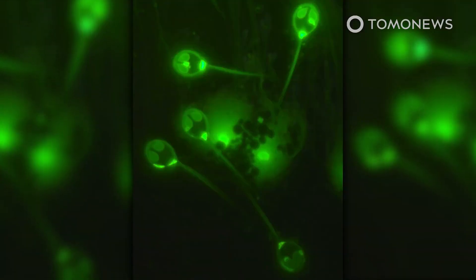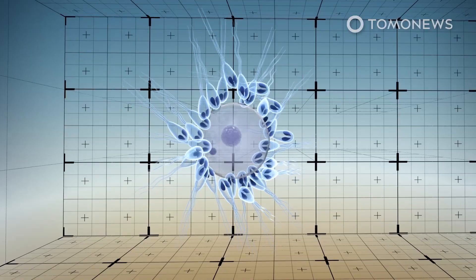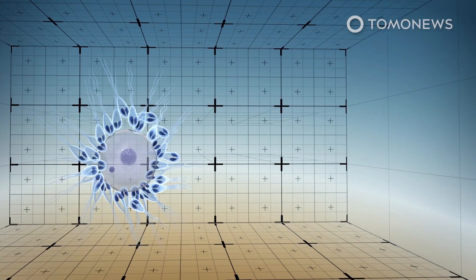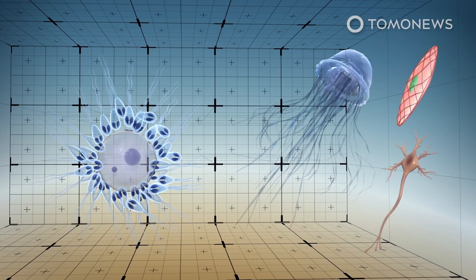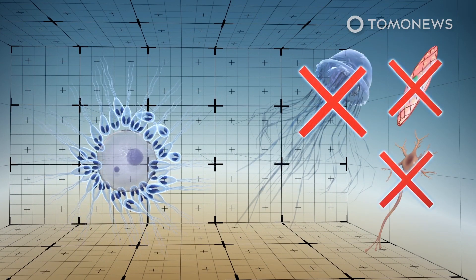The nuclei of the parasite's spores glow green under a fluorescent microscope. H. salminicola is a distant relative of the jellyfish, and the microscopic parasites have evolved to lose nerves, muscles, and tissue.